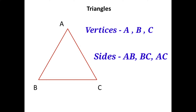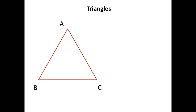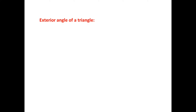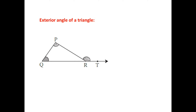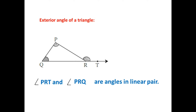Now let us study a new concept — the exterior angle of a triangle. Consider a diagram of triangle PQR. If we extend side QR so as to get a ray QT, then we get angle PRT, which makes a linear pair with the interior angle PRQ of the triangle.